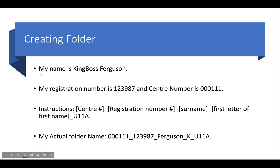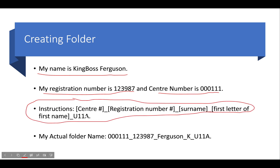Let's assume my name is King Boss Ferguson — that's not my real name. My registration number is 123987 and my center number is 000111. The format given on the exam paper is: center number, underscore, registration number, underscore, full surname, underscore, first letter of first name, underscore, U11A. U11A simply means Unit 11 Part A — that's the name of the folder.